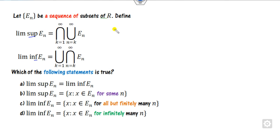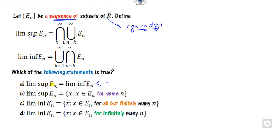Now look at the next question about limit supremum and infimum. Looking at the first option: Eₙ is a sequence of subsets. They are not specifying whether it is convergent or divergent — it means it is any sequence. But we know that limit supremum and infimum exist only for convergent sequences, so this option is wrong. Now to find the answer, we will check the supremum and infimum definitions.